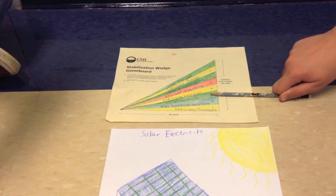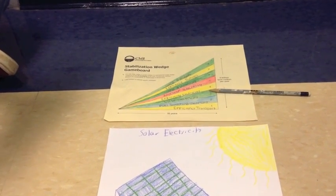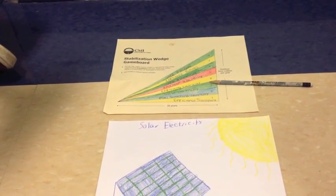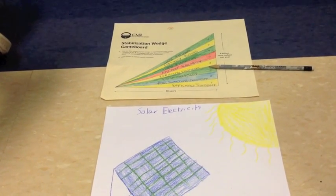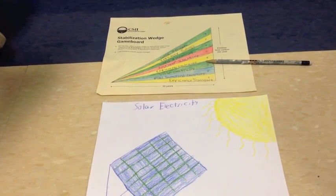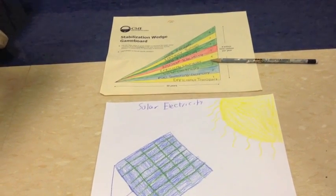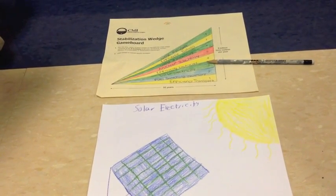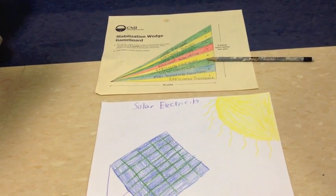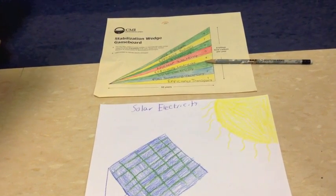Solar electricity displaces coal power and uses energy from the sun to power objects in a cheaper and cleaner way. We selected solar energy because it's a clean, cheap way of getting energy and it is a popular way to get power today.